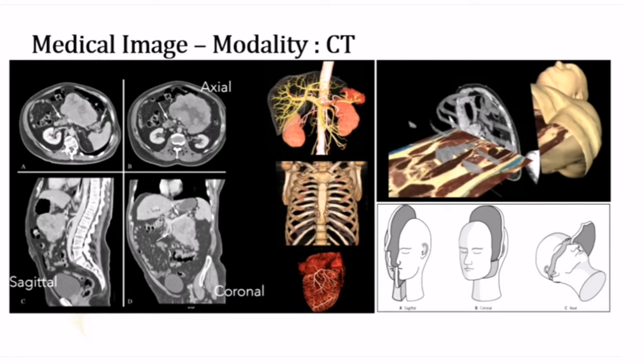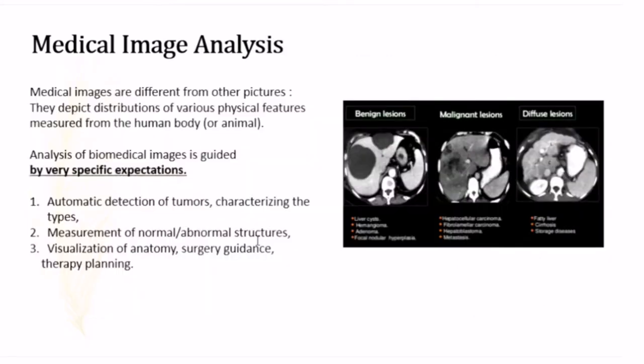Medical image seeks to reveal the internal structure hidden by the skin and bones, as well as to diagnose and treat disease. Medical images are very different from other pictures. Usually, medical images are used to do automatic detection of tumors, characterizing the types, or doing measurement of abnormal or normal structures. It's also used for visualization of anatomy, surgery guidance, and therapy planning.